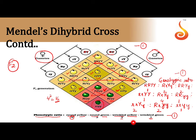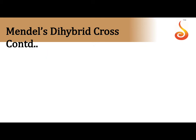A short tip to remember: the monohybrid cross genotypic ratio is 1:2:1. Since it is a dihybrid cross, write it twice — 1:2:1 and 1:2:1 — and add them: 1+1=2, 2+2=4, 1+1=2. So the genotypic ratio of a dihybrid cross is 1:2:1:2:4:2:1:2:1. This way you can also remember it for competitive exams.